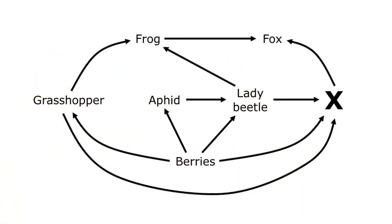Food webs show how energy is transferred between organisms in an ecosystem. Here I have an example of a food web, but you can see that I've replaced one of the organisms with an X. So here's your question: what type of organism should replace this X in the food web?